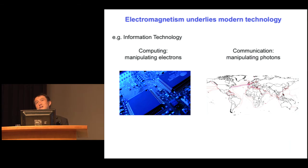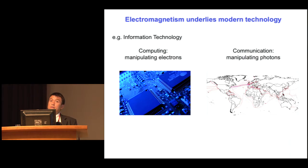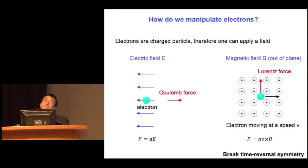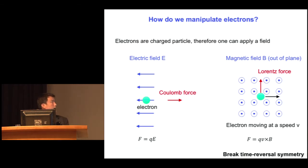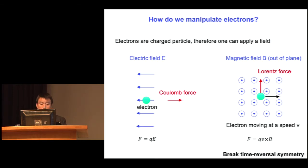This is a physics talk. I would like to briefly review the physics mechanisms that we have for controlling electrons and for controlling light. As you learn in freshman physics, when you control an electron, you basically apply a field. For example, if you apply an electric field, you generate a Coulomb force that acts counter to the direction of the field.